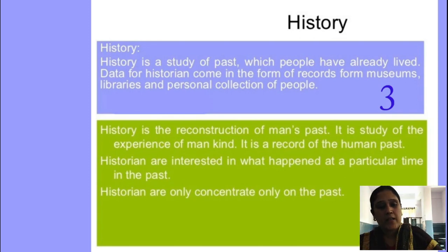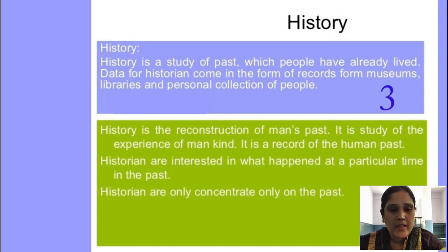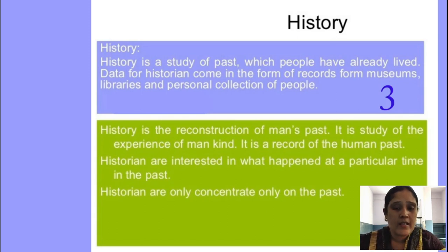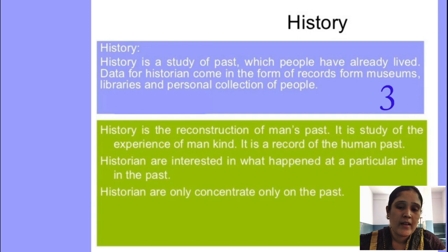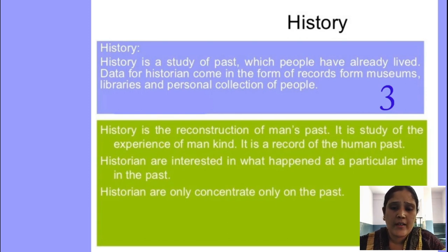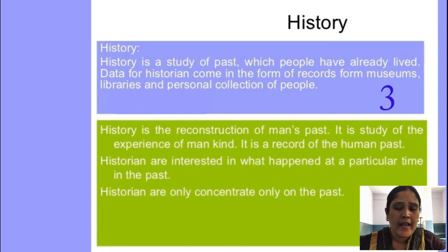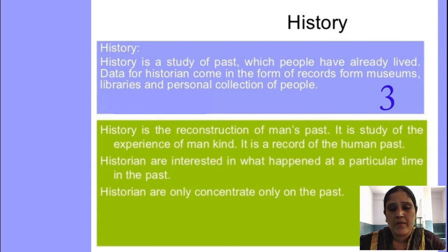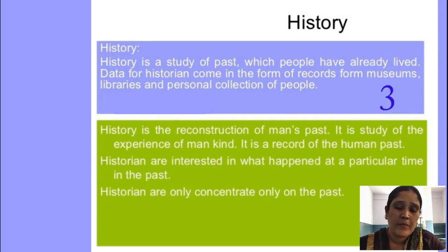When talking about past civilizations, the present makes us change what happened in the past and what type of implementation should be taken into consideration. In our country India, the constitution came into existence by seeing the past — how the Britishers exploited India by draining the economy — and by seeing that past, they made the constitution so that all are equal before the law. The historian concentrates only on the past, and by seeing the past, we can change the present society.